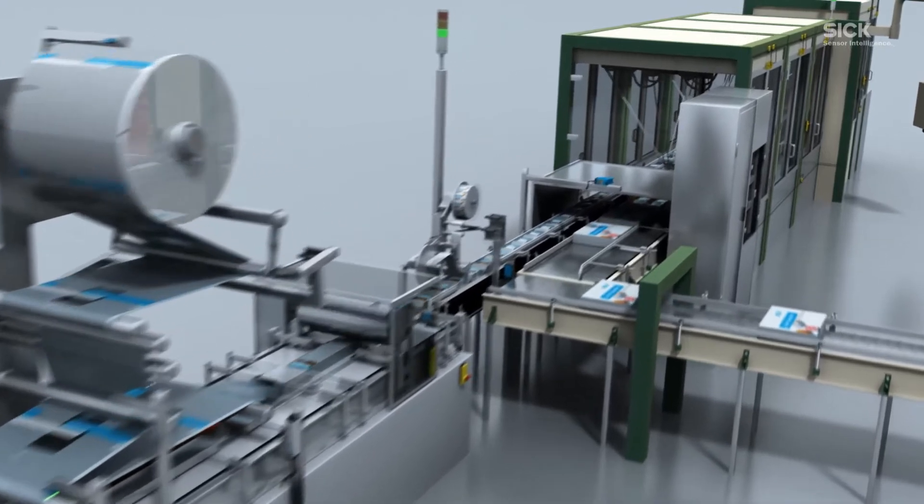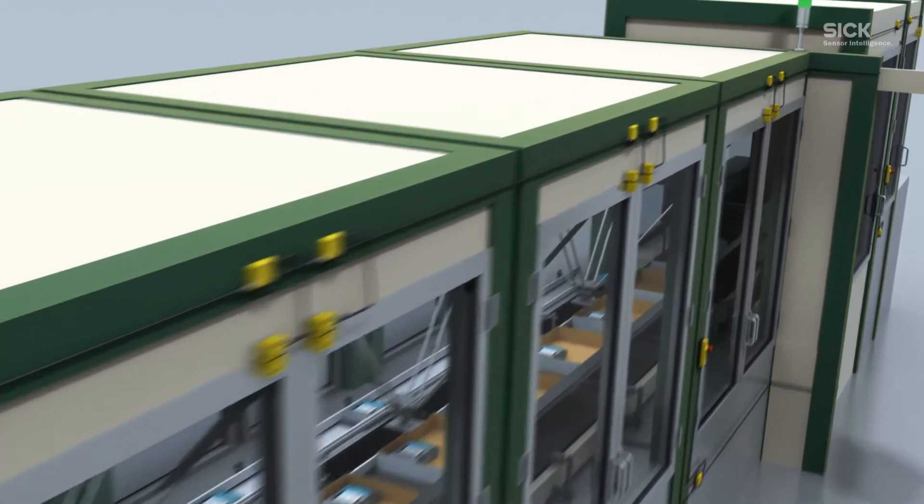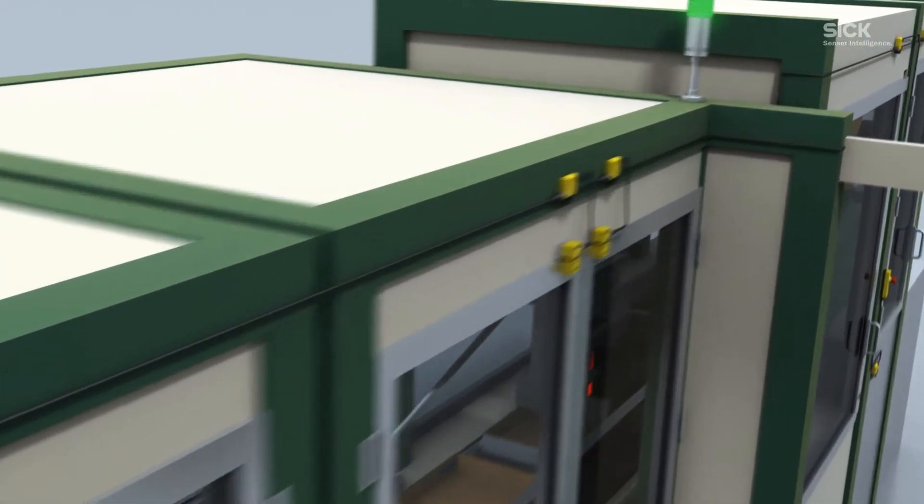The Flexi-Loop always knows what is happening in the machine and where. Door switches, emergency stop push buttons and sensors are constantly monitored.